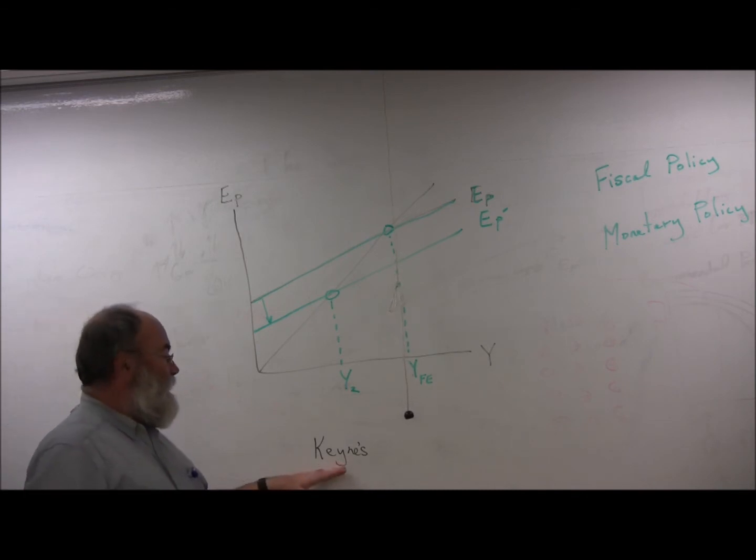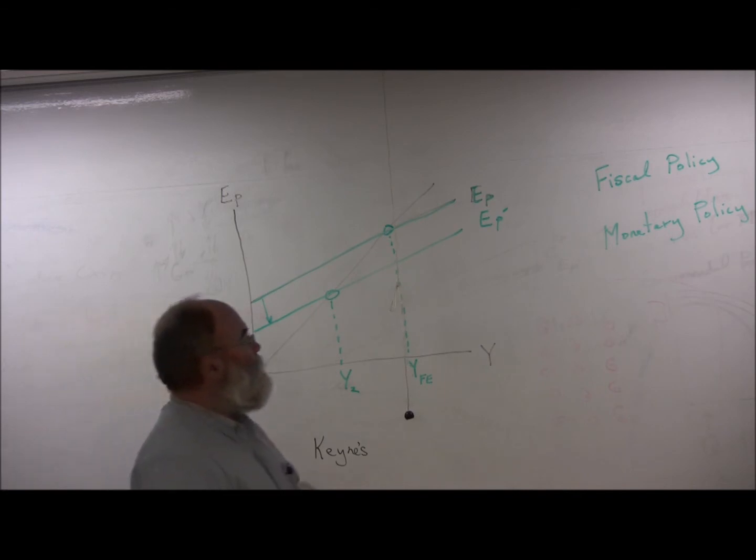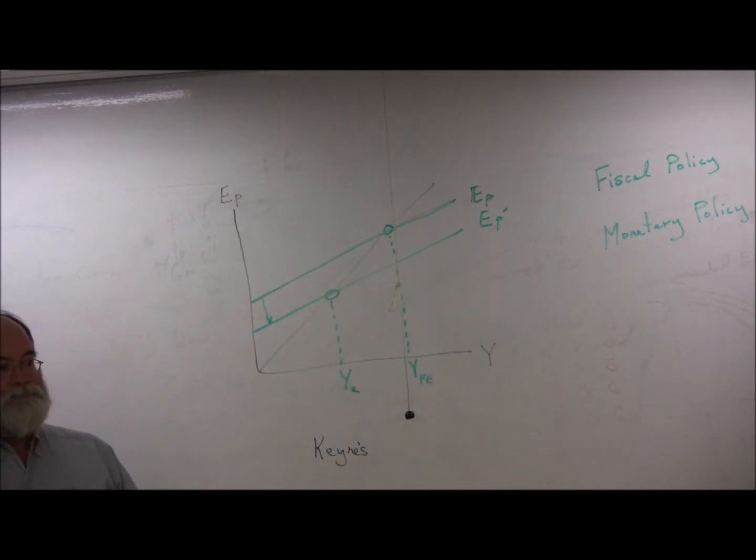So what Keynes said is government has a responsibility to step in and try to fix this problem, and they can do it using a combination of fiscal and monetary policy. They work best together. It's kind of like fighting with one arm behind your back. It works better when you have two.